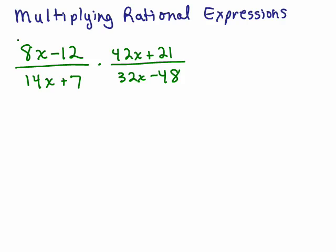We have two fractions here. What I want you to do always is put parentheses around each numerator and denominator. Remember, you can only cancel the 8x minus 12 with another 8x minus 12. Don't try to cancel the 8 and the 14 or the 12 and the 7 or anything else here. It has to be the whole factor.